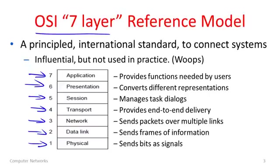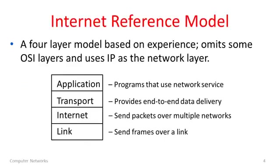So this is the OSI 7-layer model, and you're going to want to remember all of the different layers. But what we mostly use in practice, particularly in the internet, is something called the internet reference model. This is a 4-layer model that's based on experience. In some ways it's the opposite of the OSI model — the internet began to be built, and whoever implemented pieces that worked, well, that's what became the internet.